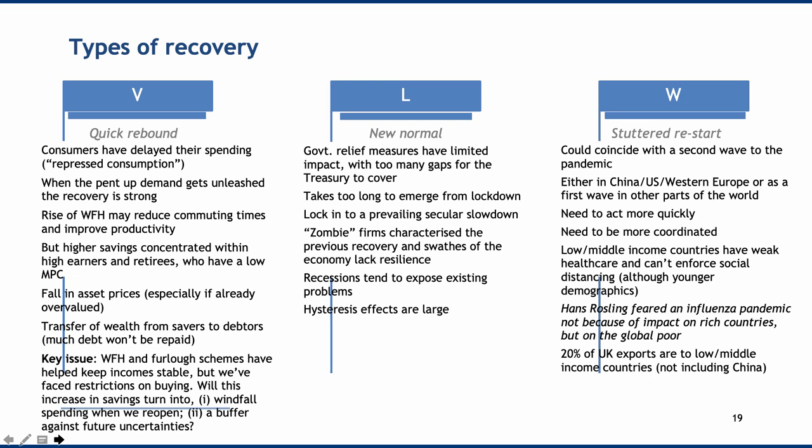The W-shaped recovery — the stuttered restart — could coincide with a second wave of the pandemic, causing multiple impacts on economic activity. Low-middle-income countries have weak healthcare and can't enforce social distancing, but they do have younger demographics, which works in their favour. Hans Rosling feared influenza pandemics not because of the impact on rich countries but on the global poor. 20% of UK exports go to low-middle-income countries, so a global pandemic has a global economic impact.